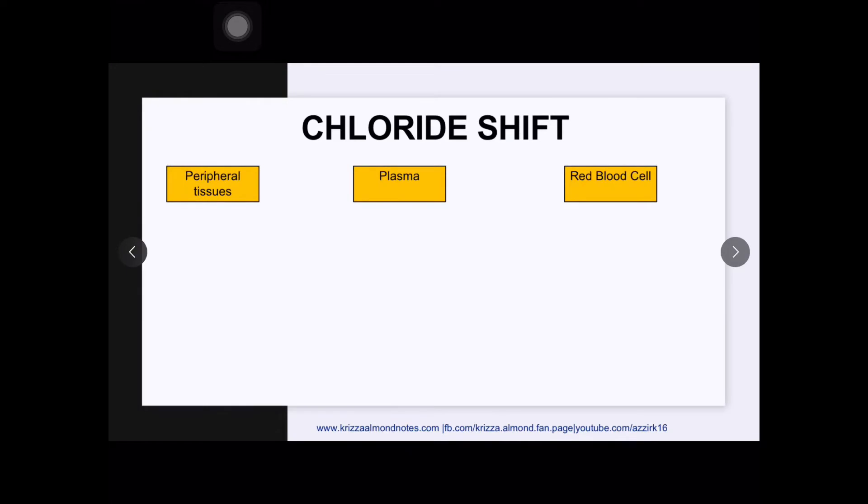The story that we want to know for the chloride shift will start in the peripheral tissues where we will see the carbon dioxide as the end product of cellular metabolism. This carbon dioxide will go to the plasma which will then diffuse into our red blood cells because of the gradient.